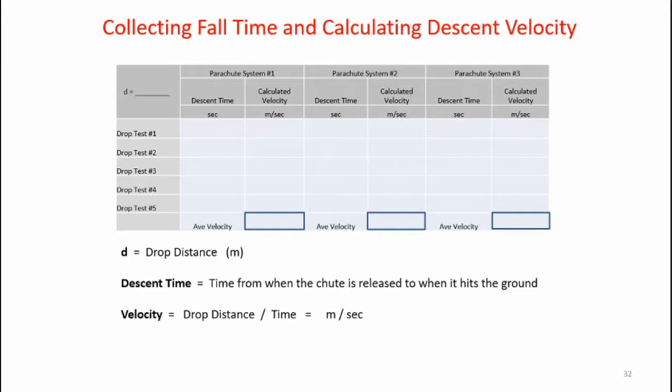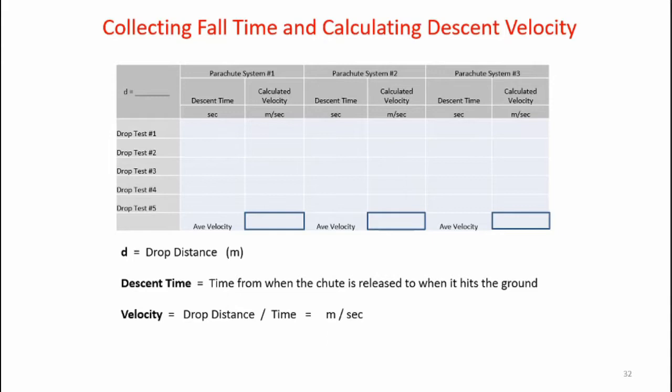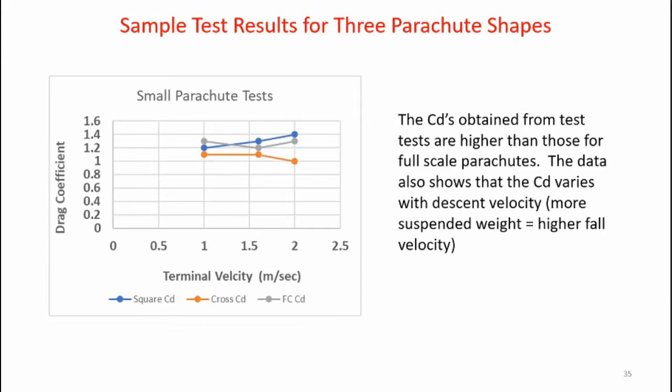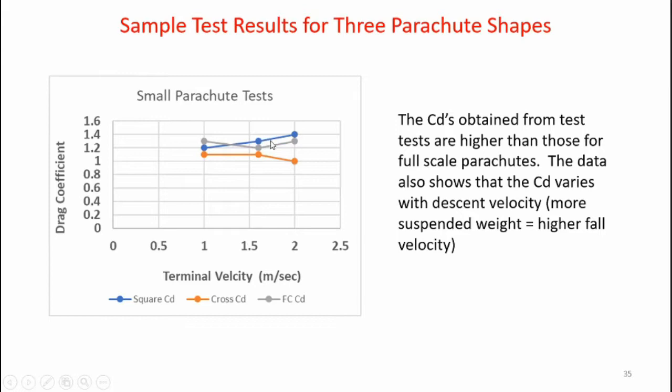Here are sample data tables used during testing — one measuring descent times and calculating average velocities, and another using those to calculate drag coefficients. After all drop tests were completed and calculations made, here are the drag coefficients determined from the experimental tests. Three terminal velocities were used, with resulting drag coefficients for each. The average drag coefficient for the flat circular parachute came out to 1.3, the square parachute also had a drag coefficient of 1.3, and the cross parachute had the smallest CD at 1.1.